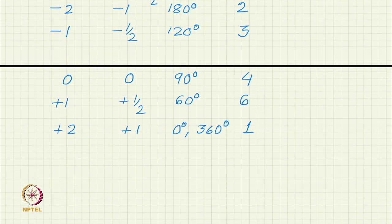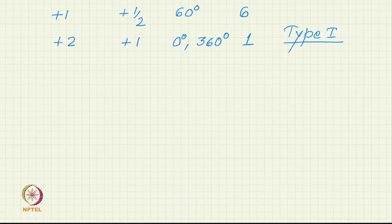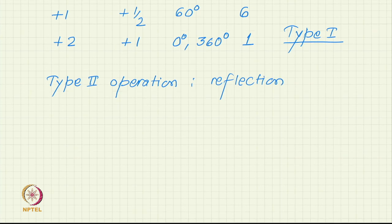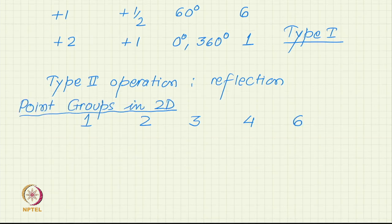These are all type 1. What is the type 2 operation in 2D? Reflection. We have 6 point groups now in 2D: 1, 2, 3, 4, and 6, and then we have m as another point group. 6 point groups we have found. There are other point groups which can be obtained by combining m with these rotation axis.